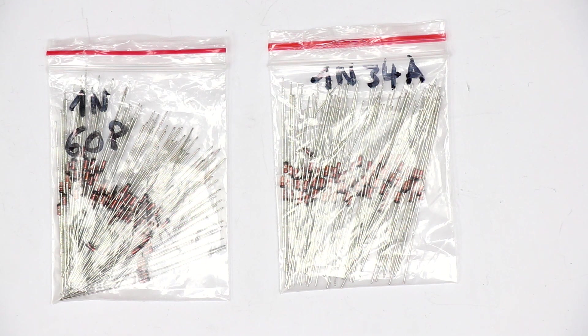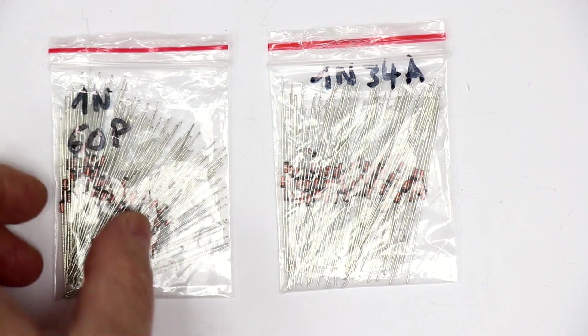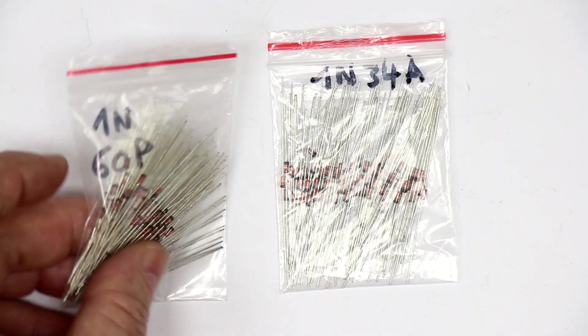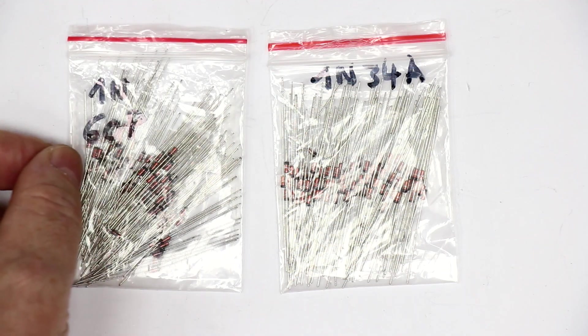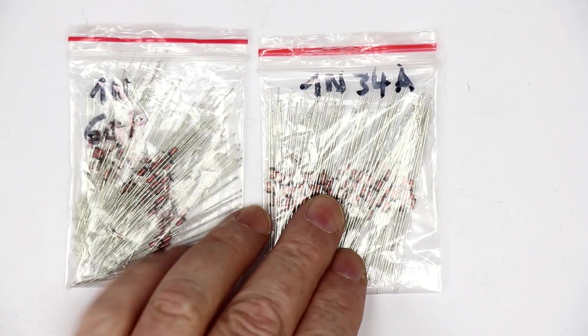Well, it all started with fake germanium diodes or diodes that were designated as germanium, like these two examples here, a 1N60P and 1N34A.